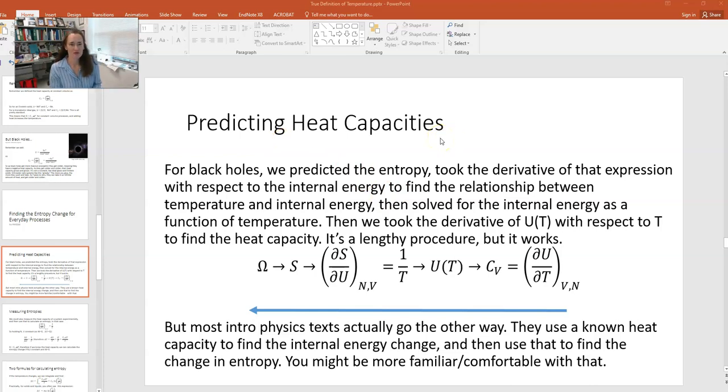Remember that for black holes and some other systems like Einstein solids and ideal gases, what we did was we talked about what the entropy was first by calculating and finding expressions for the multiplicities of those systems. So first we found the multiplicity and then we found an entropy from k log omega.